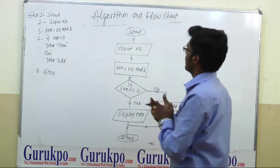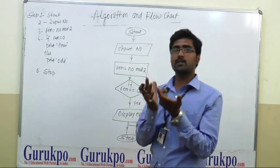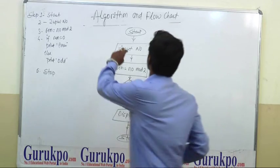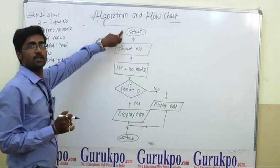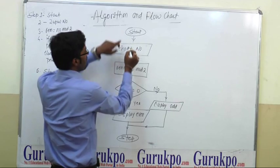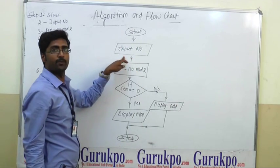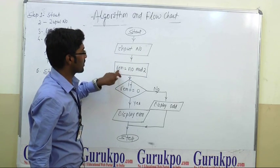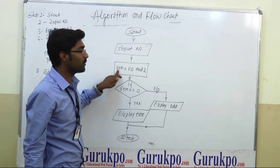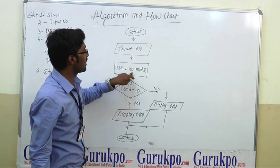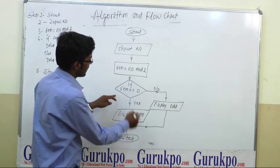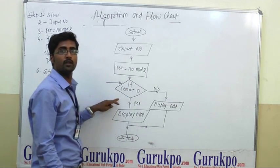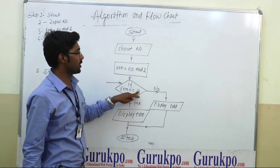How can we draw the flowchart? By using special symbols. For starting any program, the ellipse symbol is used — 'Start.' For input and output, we use the parallelogram symbol — 'input any number.' For process, we use a rectangle box — 'remainder = number mod 2.' Then this is the condition box, or diamond box — if remainder equals zero.